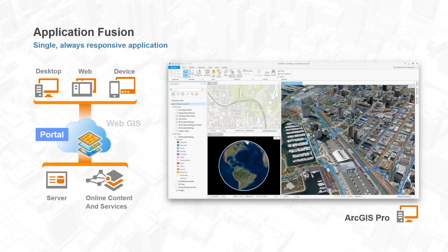In addition to that, being a desktop user, you also have access to ArcGIS Online and all the amazing content and apps associated with it. ArcGIS is an integrated system — not just pieces, though you can think of it as pieces: the desktop, the server, the online piece. What it really is is an integrated system. It's interdependent, and ArcGIS Pro takes full advantage of this.